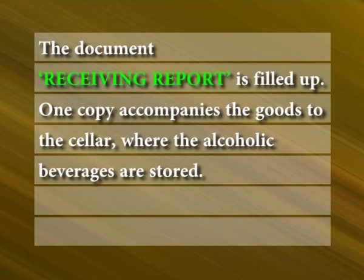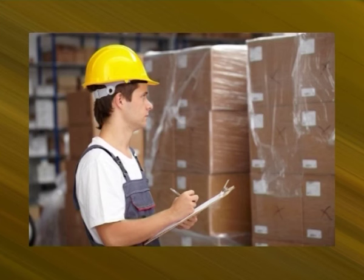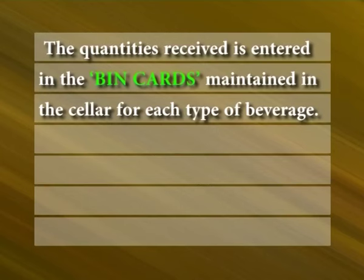The document receiving report is filled up. One copy accompanies the goods to the cellar where the alcoholic beverages are stored. In the cellar, the stock is checked against the receiving report from the receiving department. Only when the cellar personnel is satisfied with the information in the receiving report does he acknowledge the receipt of the goods. The quantities received are entered in the bin cards maintained in the cellar for each type of beverage. From the receiving department, the second copy of the receiving report is sent to the accounts department for payment.